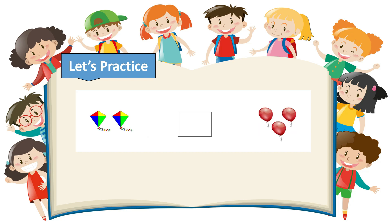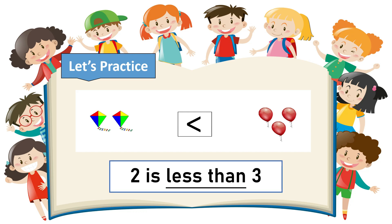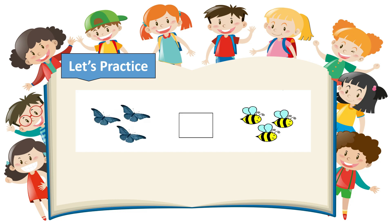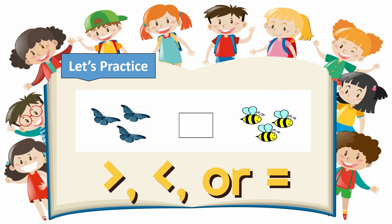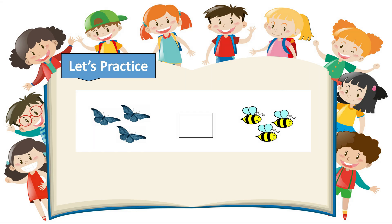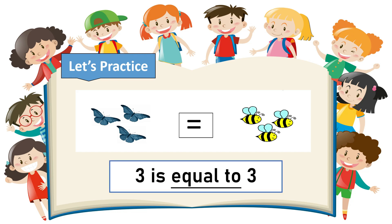What is your answer? It's less than, because two is less than three. Two is less than three. Can you say it? What is your answer — greater than, less than, or equal to? It's equal to, because three is equal to three. Three is equal to three. Can you say it aloud? Good job!